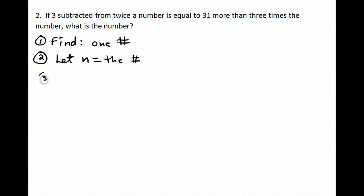For step three, I need to do some translating. First of all, it says if three is subtracted from... Okay, if I subtract three from something, that's going to look like this. What am I subtracting it from? I'm subtracting it from twice a number. Okay, so 2n minus three.